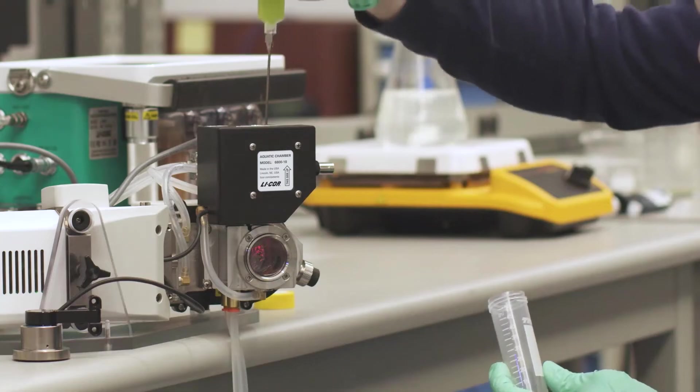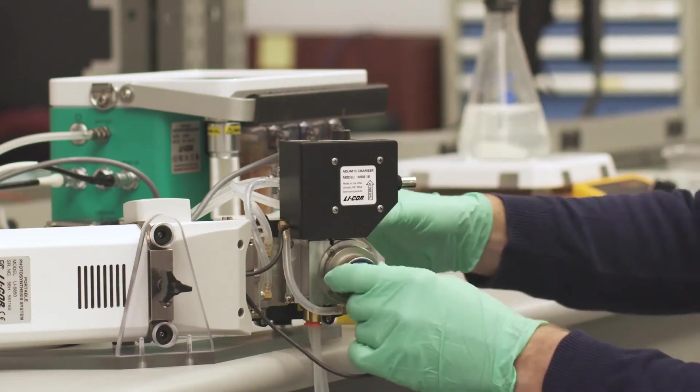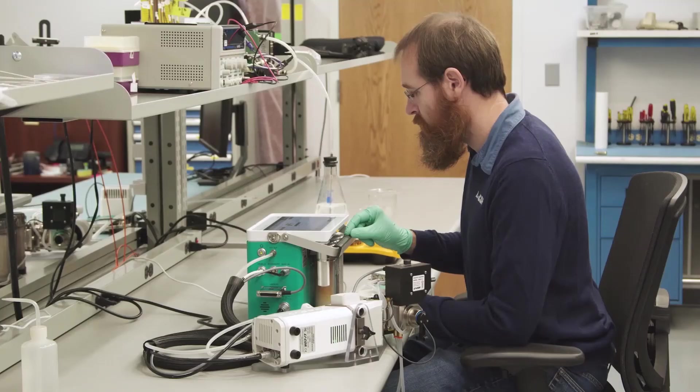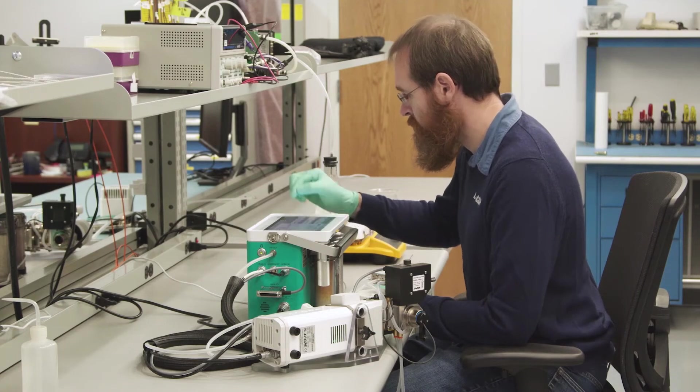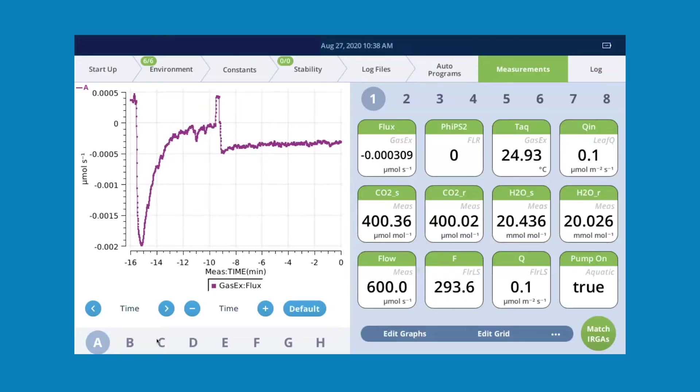These cells are going to go in the chamber. We're going to start them in the dark. And we're going to slowly increase the light intensity and make measurements of chlorophyll fluorescence, particularly phi-PS2 and electron transport rate and carbon assimilation as we move across light intensities.